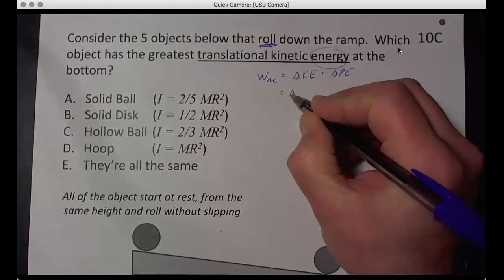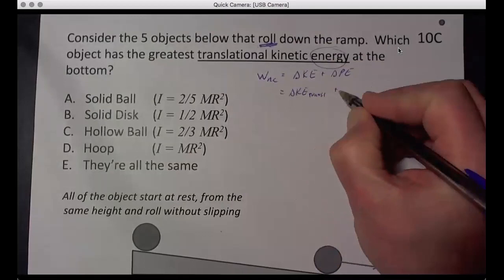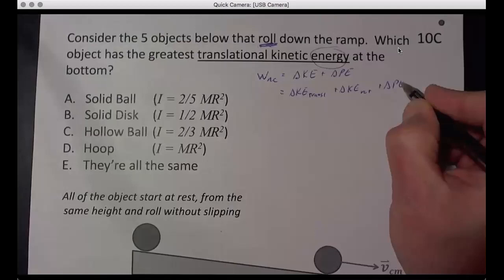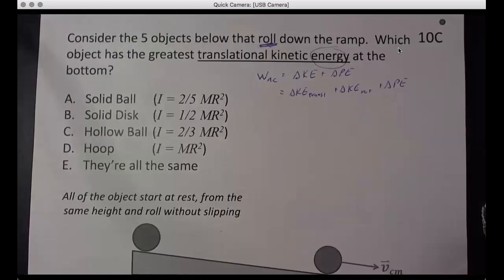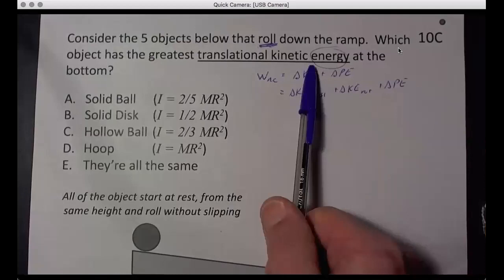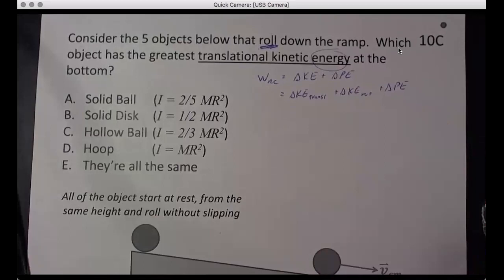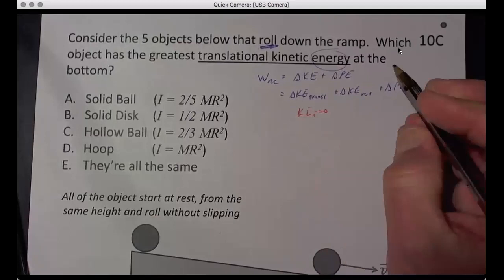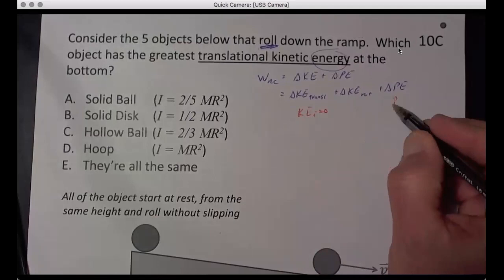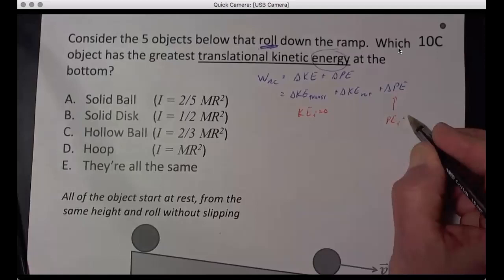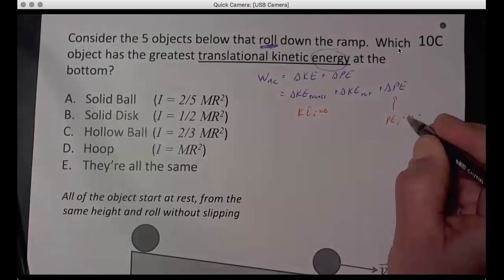Which here is delta KE translation plus delta KE rotation plus delta PE. If they start from rest, then the initial KEs are both zero, so these become KE finals. And PE initial is M, we use capital M, so that's MGH, where H is the height over here.